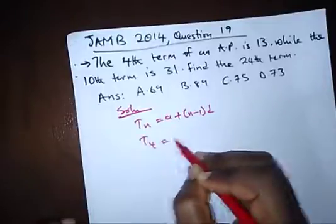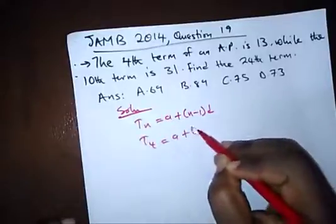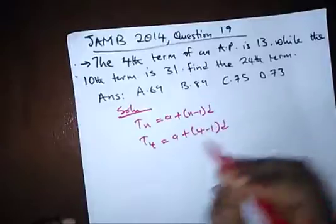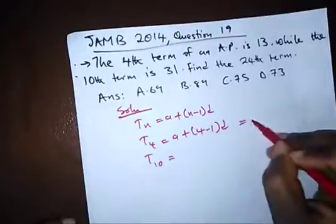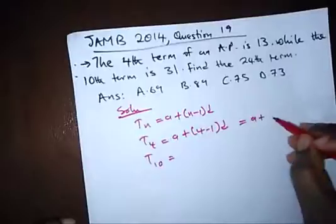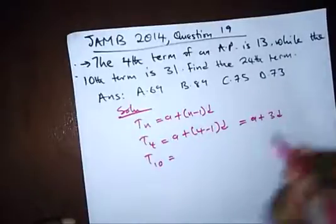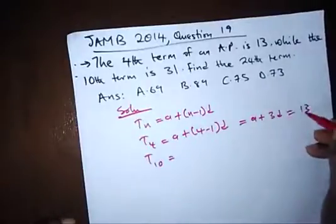And our fourth term is A plus 4 minus 1 bracket D. This will give us A plus 3D, which is 13.